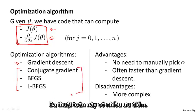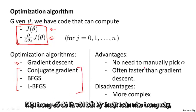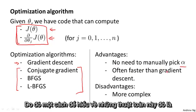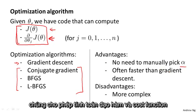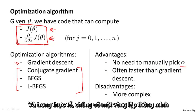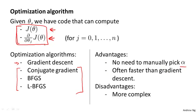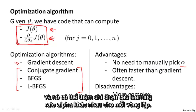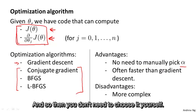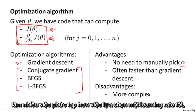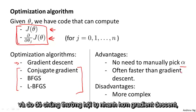These three algorithms have a number of advantages. One is that with any of these algorithms, you usually do not need to manually pick the learning rate alpha. One way to think of these algorithms is that, given the way to compute the derivative and the cost function, you can think of these algorithms as having a clever inner loop — in fact, they have a clever inner loop called a line search algorithm that automatically tries out different values for the learning rate alpha and automatically picks a good learning rate alpha, so that it can even pick a different learning rate for every iteration. And so you don't need to choose it yourself. These algorithms actually do more sophisticated things than just pick a good learning rate, and so they often end up converging much faster than gradient descent.